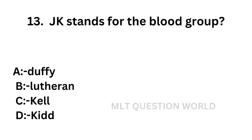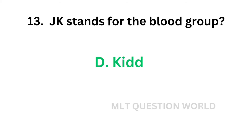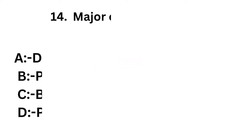Question 13: JK stands for which blood group? Option A: Duffy, option B: Lutheran, option C: Kell, option D: Kidd. The correct answer is option D, Kidd. Two antigens have been detected which belong to this system and are called JKA and JKB.